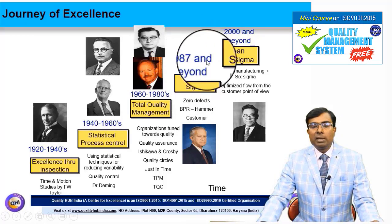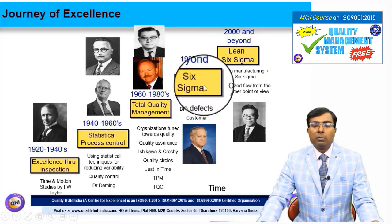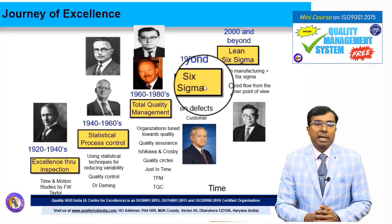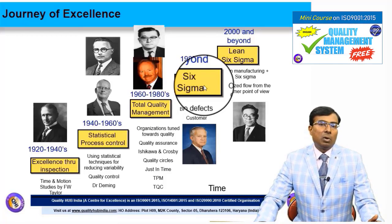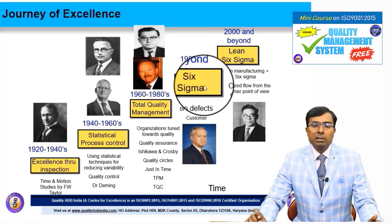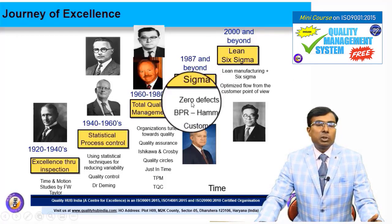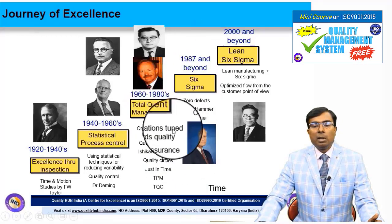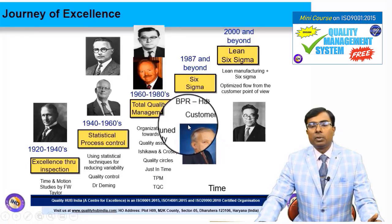From 1987 and beyond, the concept of Six Sigma evolved. Bill Smith, the person behind the concept of Six Sigma, was working as an engineer and scientist at Motorola when he developed this concept. It was later modified and amended to suit industry needs. During this time, the concept of zero defects and business process re-engineering also emerged, and focus shifted from plant-level control to customer-centric organizations.